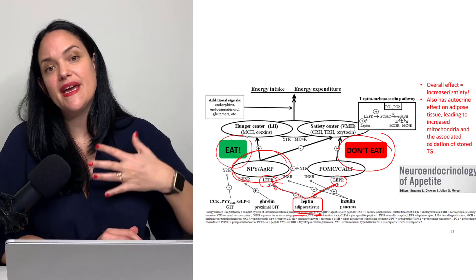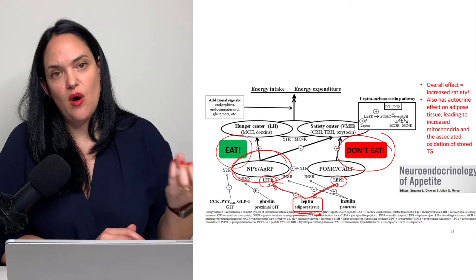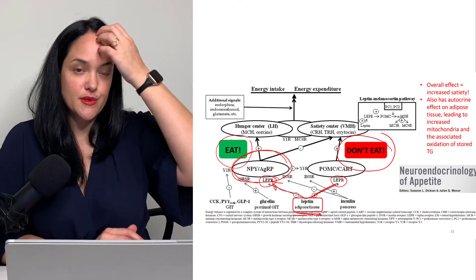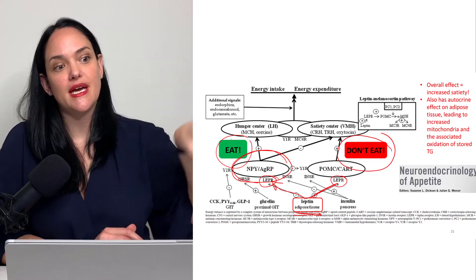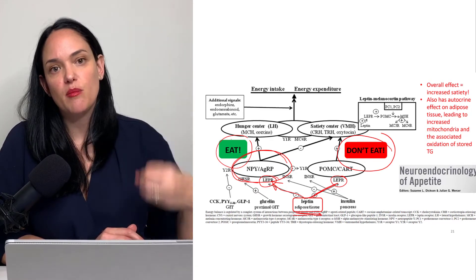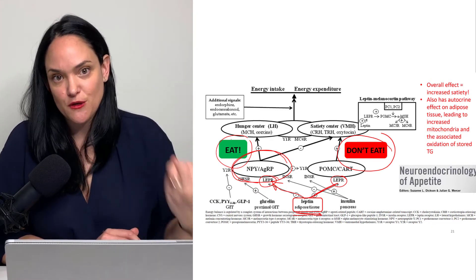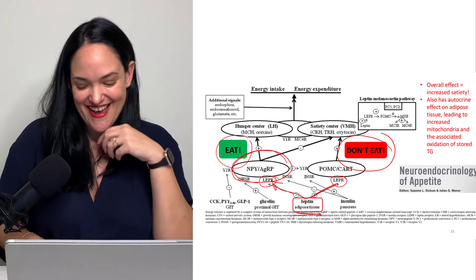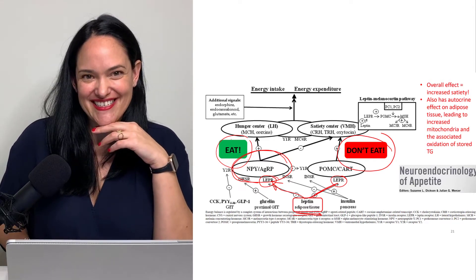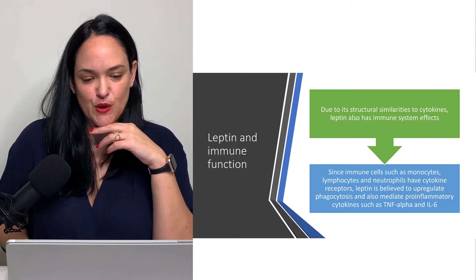Leptin is secreted by adipose tissue and has leptin receptors on various sites within the hypothalamus. The appetite system in our hypothalamus is dually regulated — there's an eat pathway, or appetite-inducing pathway, and a don't-eat pathway, or satiety pathway. Leptin has a stimulatory effect on the satiety pathway and an inhibitory effect on the appetite pathway. This is why leptin helps reduce food consumption and ideally keeps our body in energy balance.